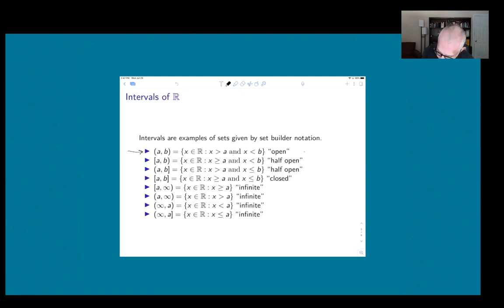So if we were going to draw this on the real line using sort of calculus-type notation, we would have a and we would have b, and we would take everything in between, but we would omit the endpoints. So it's this interval here.